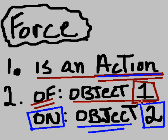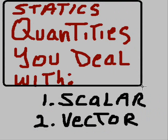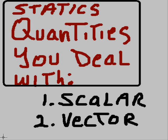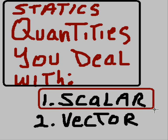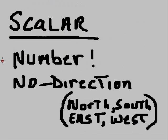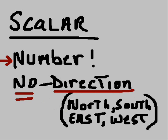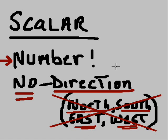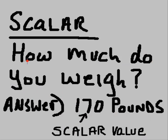In statics, the quantities that you deal with are scalar quantities — and what other kinds of quantities do you deal with? You also deal with vector quantities. A scalar is a number.